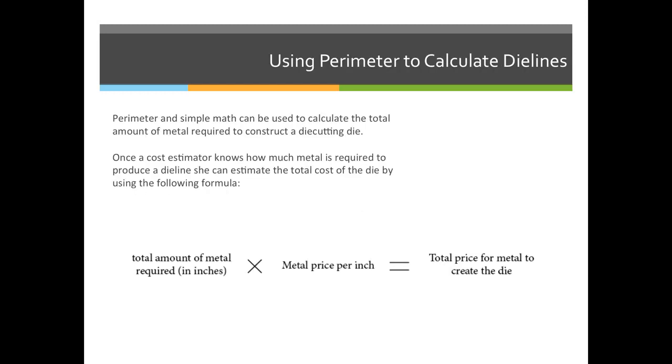When you're ready and you have the perimeter, or you have the amount of metal, the formula to calculate the price of the die is the total amount of metal required in inches, multiplied by the price of the metal per every 1 inch.